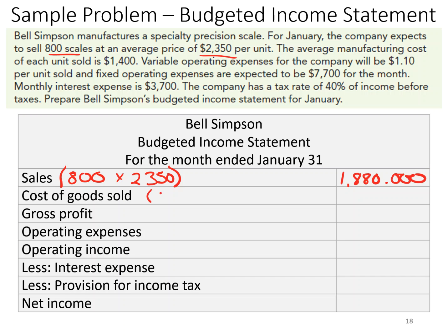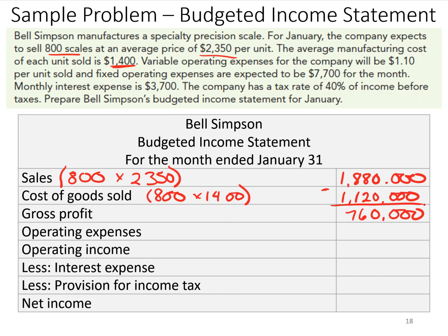Cost of goods sold: on 800 units, they say the average manufacturing cost is $1,400. So 800 times $1,400 is $1,120,000. Gross profit then — we take our sales minus our cost of goods sold. That gives us $760,000 in gross profit, with which to pay all of our other expenses.